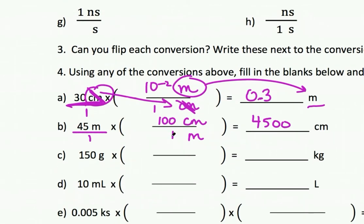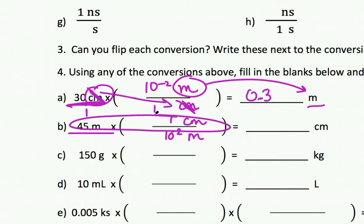So let's say I had the other version here: 1 centimeter on top and 10 to the minus 2 meters on bottom. So what I would do is 45 times 1—I do the top numbers, multiply those, 45 times 1—and then I divide by the bottom numbers. So I divide by 1 and then I divide by 10 to the minus 2. I'm sorry this is so messy.